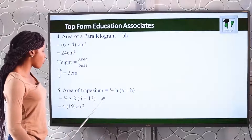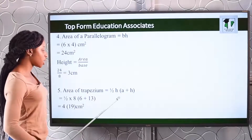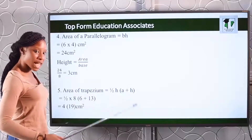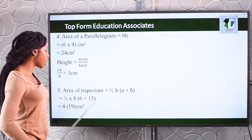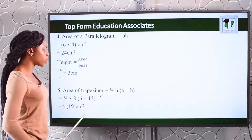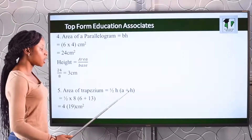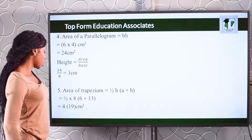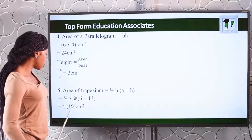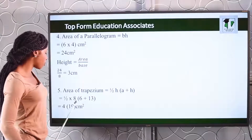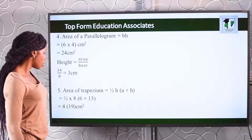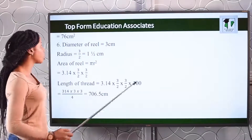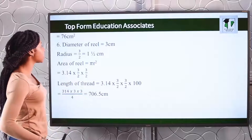Number five: we are asked to find the area of a trapezium. The formula is half H, open bracket, A plus B, where H is the height and A and B are the two parallel sides. We input our figures: half multiplied by 8, open bracket, 6 plus 13. The area of the trapezium is 76 centimeters squared.